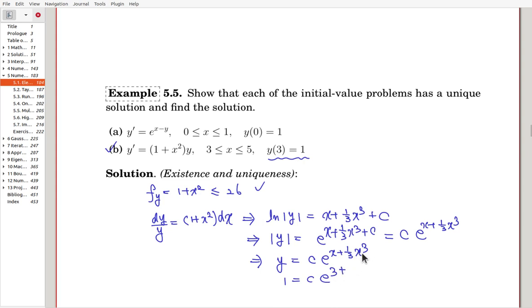That is now here, 27 divided by 3, which is 9, so that c times e to the 12. From here, we can get c is e to the minus 12.